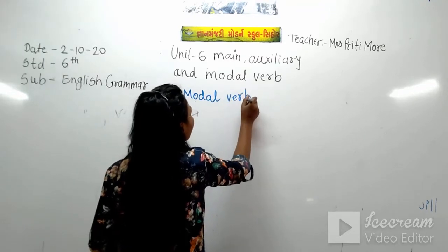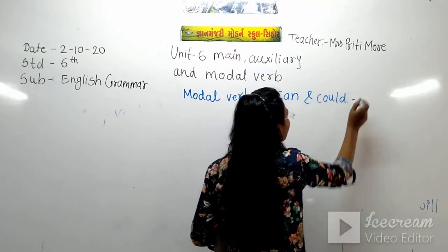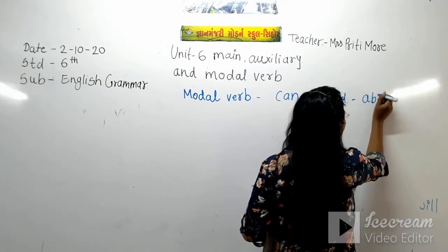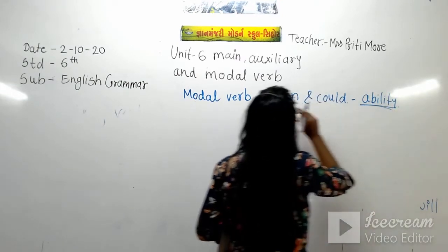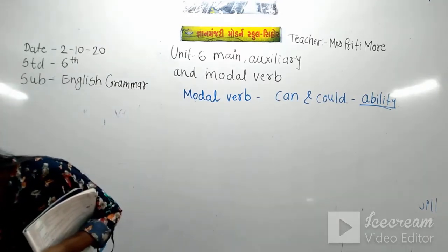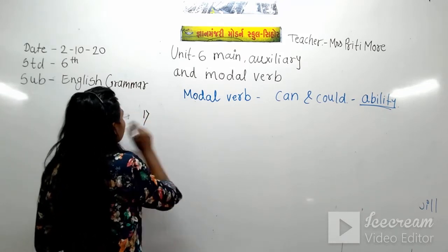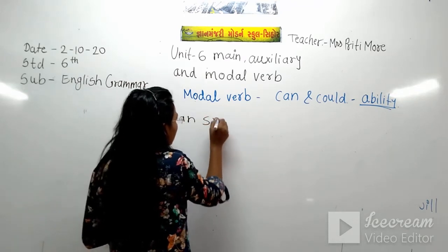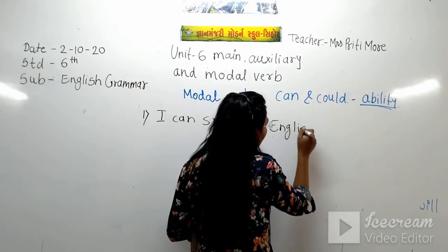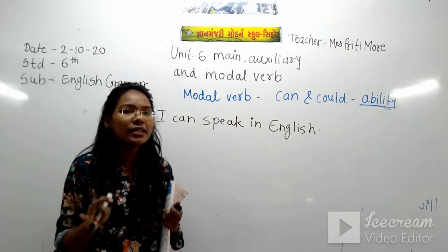First we will see the example of can and could. Modal verb can and could — it shows ability. To show ability we use can, and in the past we use could. For example: 'I can speak in English.' That means I am able to speak in English.